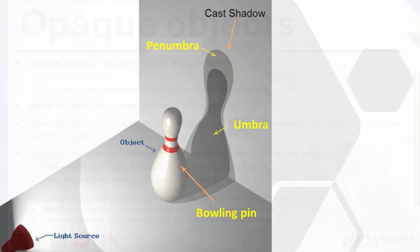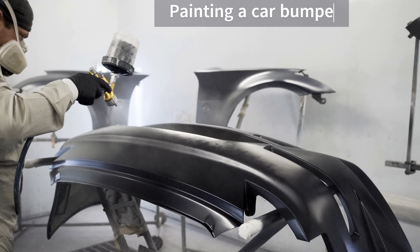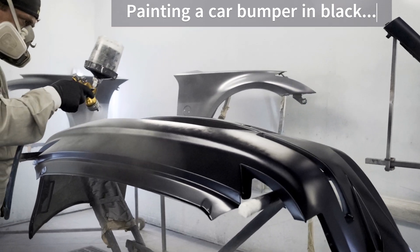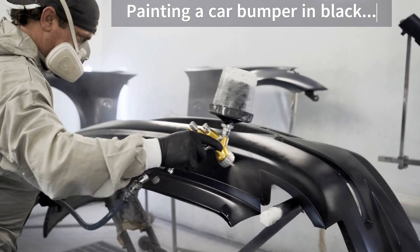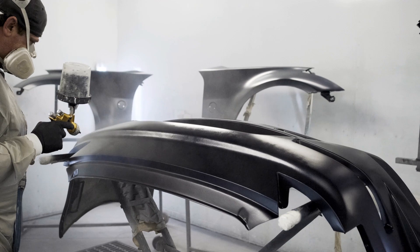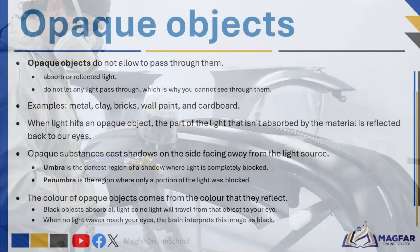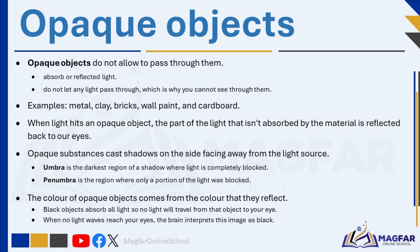The color of opaque objects comes from the color that they reflect. All black objects absorb light, so no light travels from that object to your eye — the brain interprets this as black. Opaque objects form shadows on the side turned away from the light source. A shadow forms when an object blocks light from reaching behind it, and it is the dark area visible on the ground or screen when light is blocked.